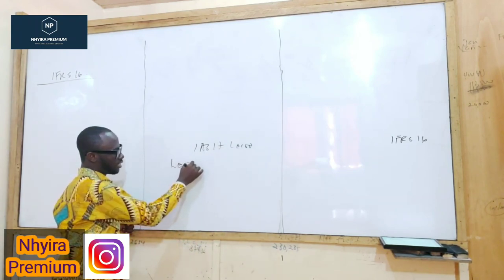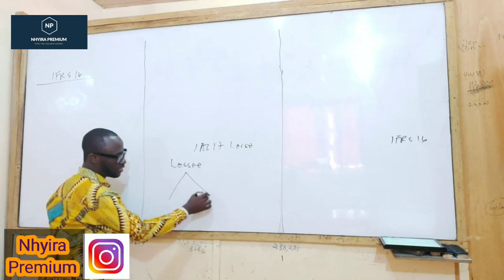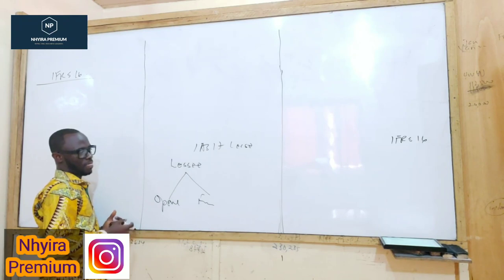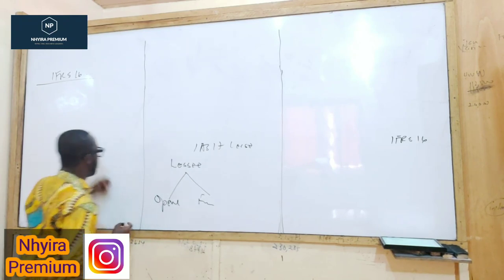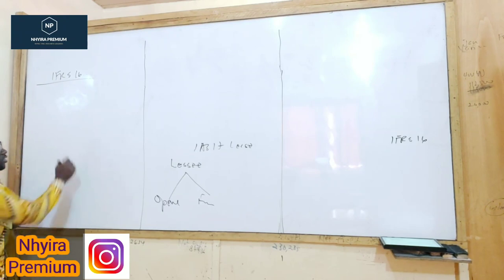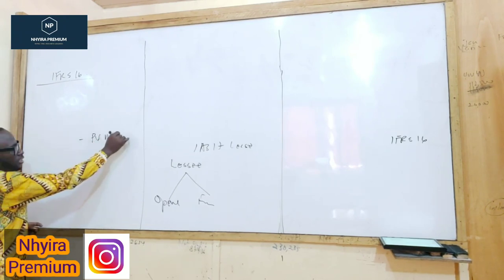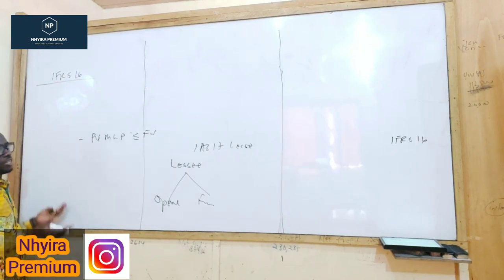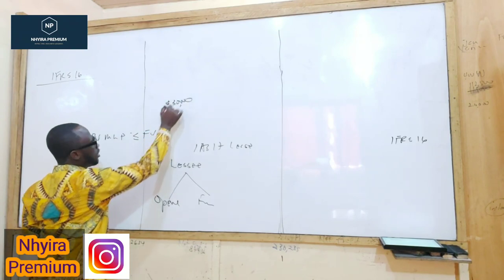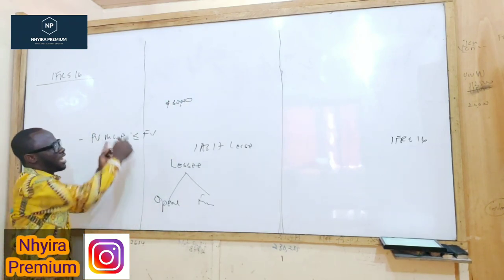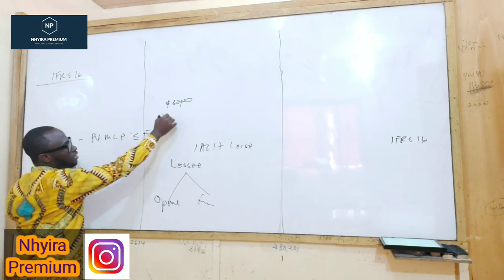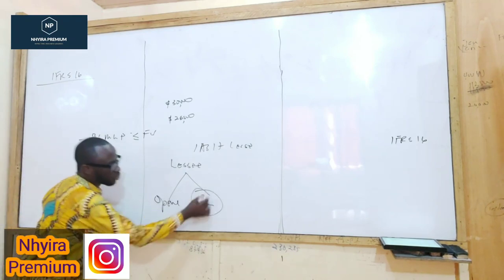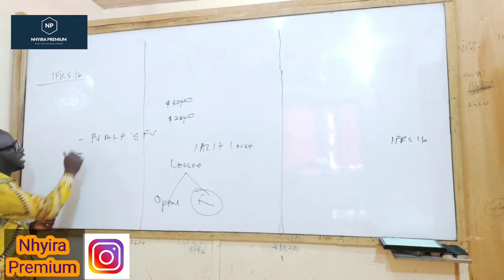Under IAS 17, it is the lessee that classifies the lease into whether it is an operating lease or a finance lease. The benchmark for classification was to meet certain requirements — for instance, if the present value of the minimum lease payment is almost equal to the fair value of the asset. So if the asset is $30,000 and you're leasing it for 10 years and the discounted payments come to around $26,500, the asset is almost yours, so it becomes a finance lease.